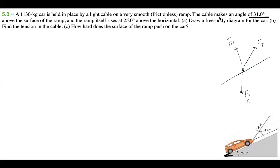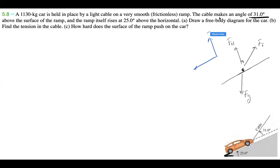Normal force is always perpendicular to the surface. Now let's set up a coordinate system: the positive y-axis points perpendicular to the ramp surface (outward), and the positive x-axis points parallel to the ramp surface (up the ramp). That completes part (a) — our free body diagram.